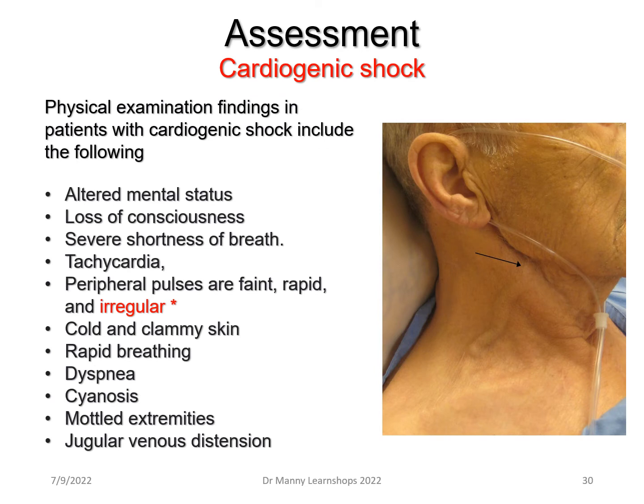What about assessment — physical assessment and examination? This includes neurologically: altered mental state, loss of consciousness. The respiratory system: severe shortness of breath, tachycardia. Peripheral pulses will probably be faint, rapid, and irregular. Cold, pale, clammy skin; rapid breathing; distant heart sounds; cyanosis; possibly mottled extremities; and definitely jugular venous distension, as demonstrated in the image in front of you.